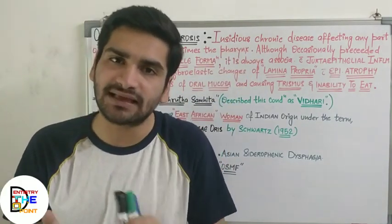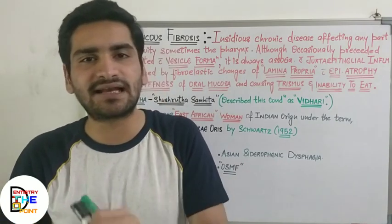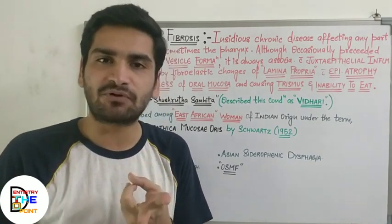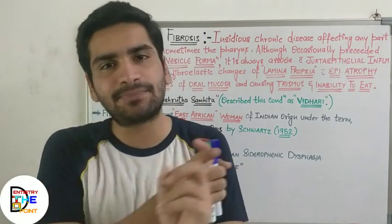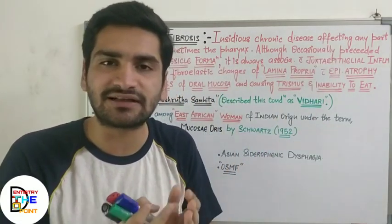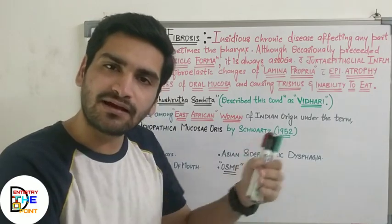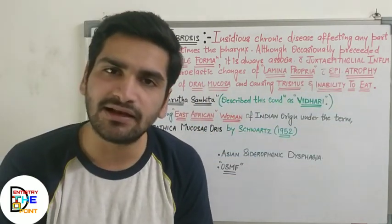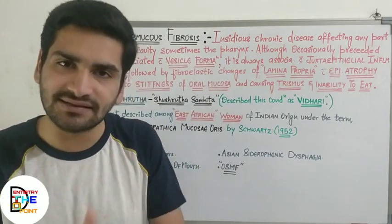Let's revise the definition once more: insidious chronic disease affecting any part of the oral cavity, sometimes also affecting the pharynx. Although occasionally preceded by or associated with vesicle formation, it is always associated with juxta-epithelial inflammatory reaction, followed by fibroelastic changes of the lamina propria with epithelial atrophy, leading to stiffness of the oral mucosa and causing trismus and inability to eat. Review this definition 4 to 5 times and you will not forget it.